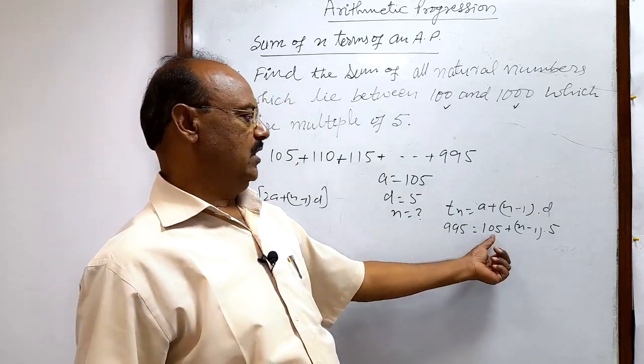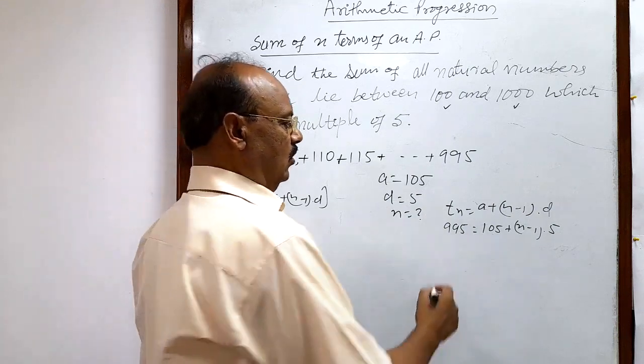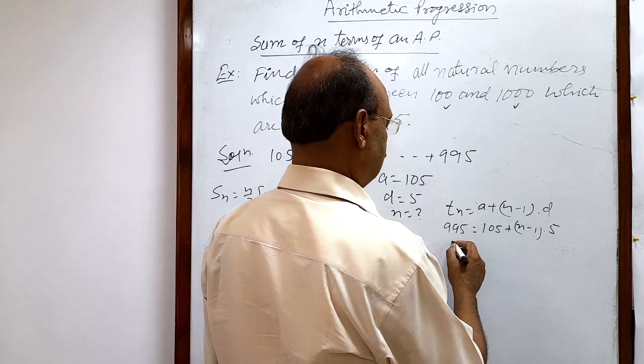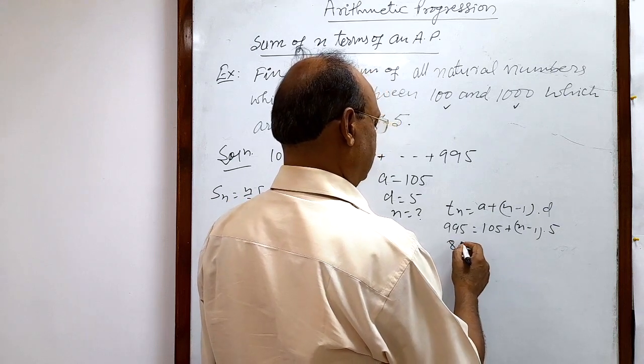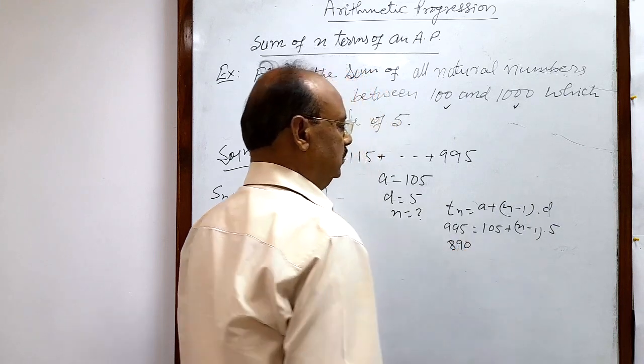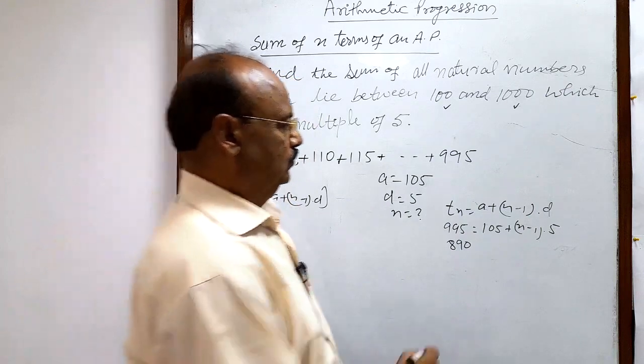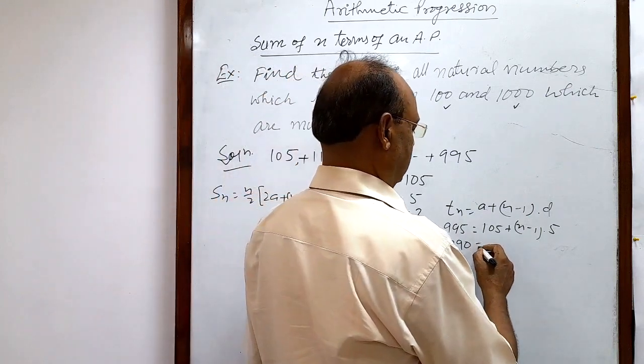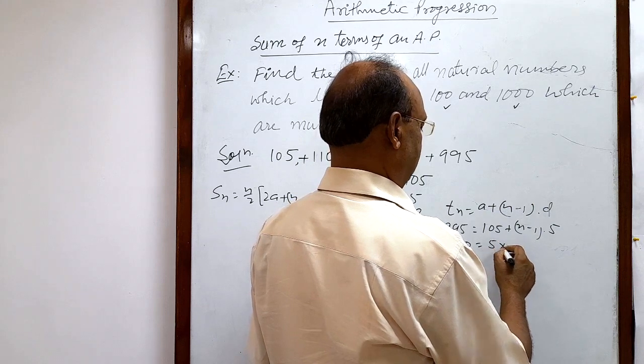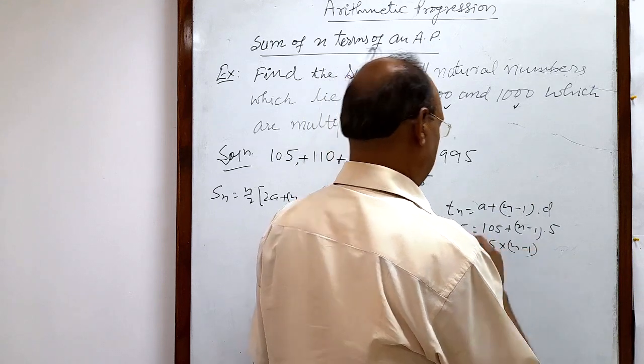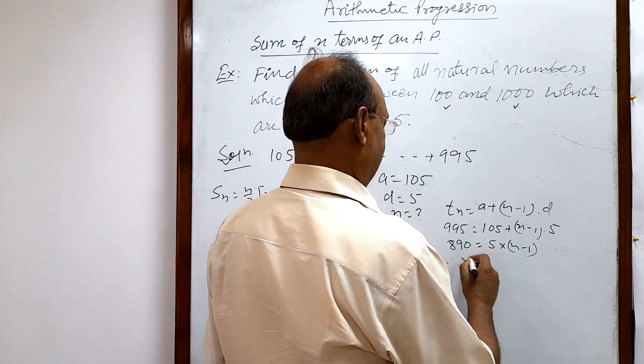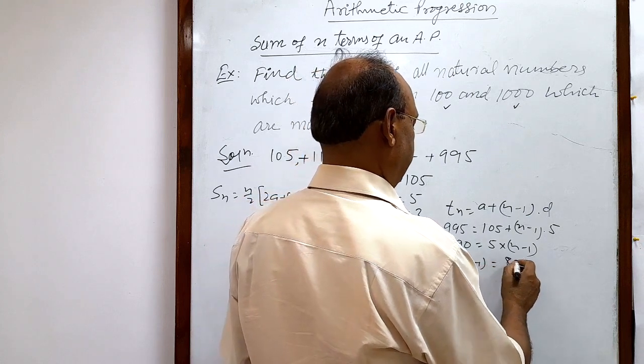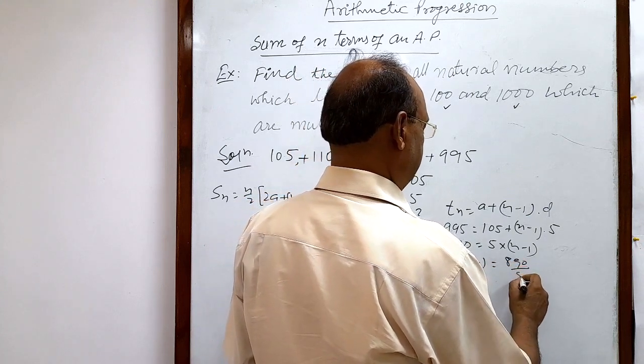Let us transpose 105 to this side. We will get 890 is equal to 5 times (n minus 1), and therefore n minus 1 is equal to 890 divided by 5.